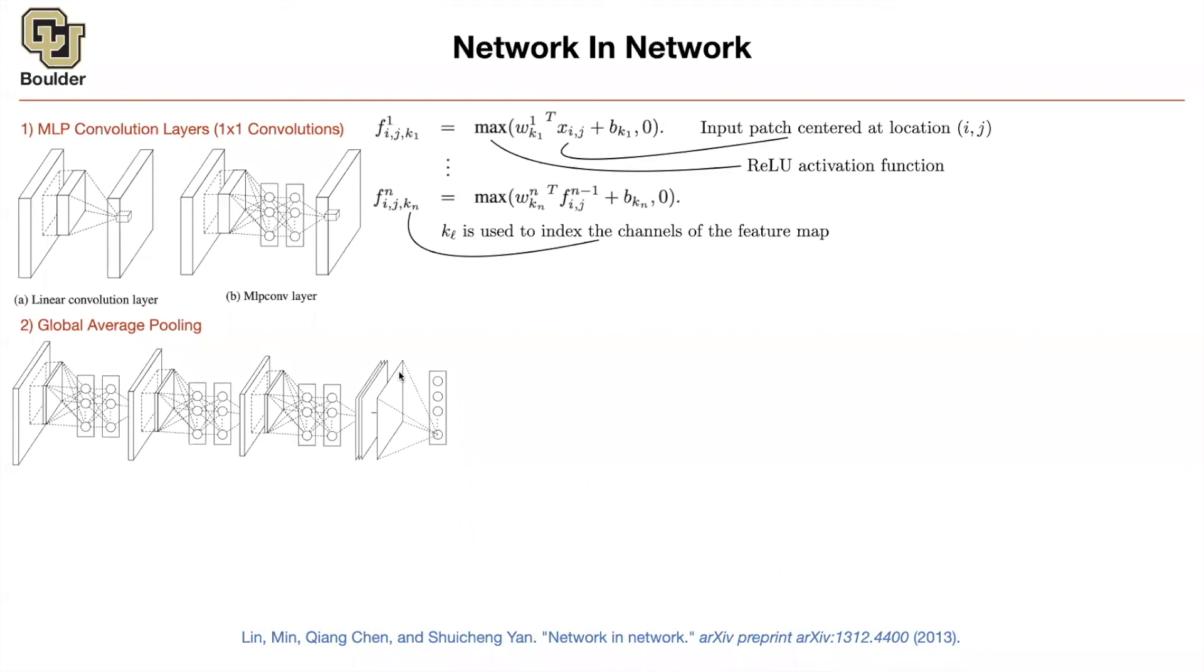Yeah, and you're using, so like throughout the whole network, you're using these one by one convolutions, and then global average pooling is just this last sort of step. Exactly. So you have a regular convolution here and then one by one convolutions here. And then a regular convolution, one by one, regular, one by one, and in the end average pooling. Okay, cool. Thank you. Any other questions?